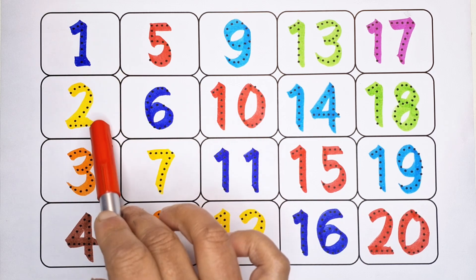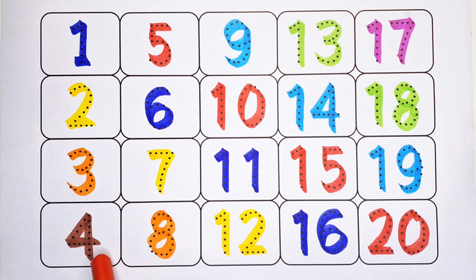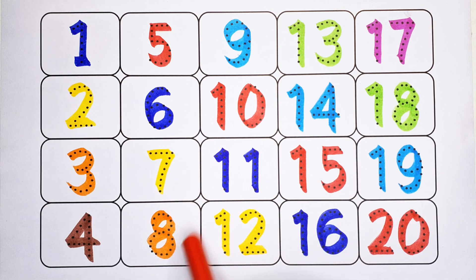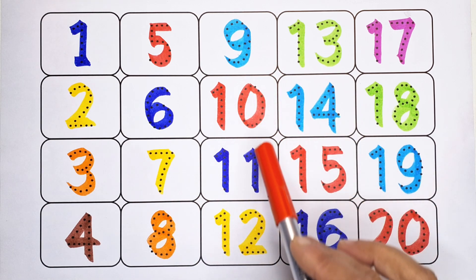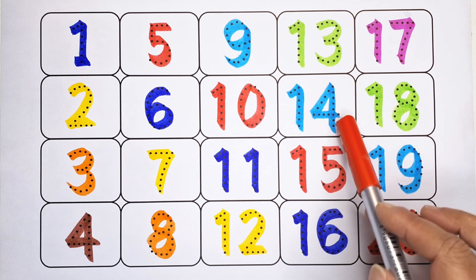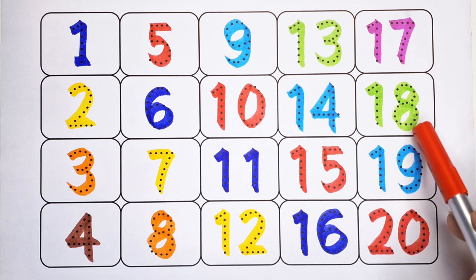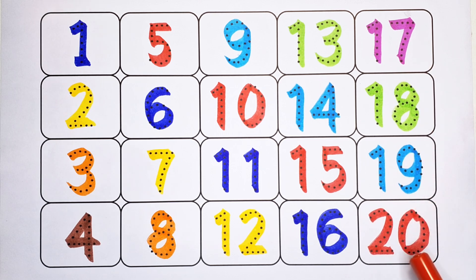One, two, three, four, five, six, seven, eight, nine, ten. Eleven, twelve, thirteen, fourteen, fifteen, sixteen, seventeen, eighteen, nineteen, twenty.